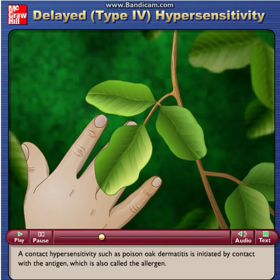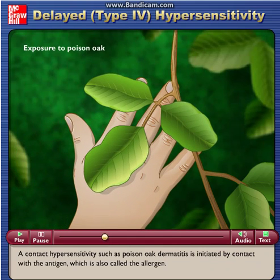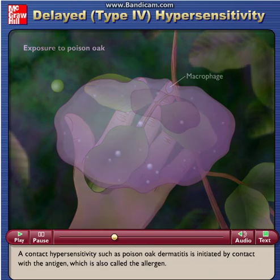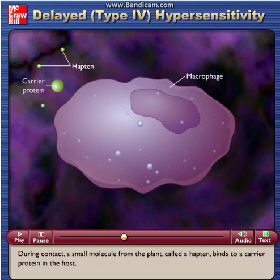A contact hypersensitivity, such as poison oak dermatitis, is initiated by contact with the antigen, which is also called the allergen. During contact, a small molecule from the plant, called a hapten, binds to a carrier protein in the host.